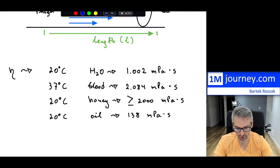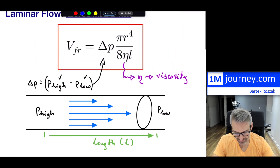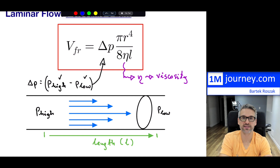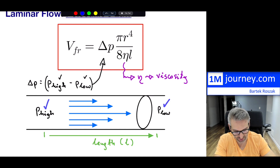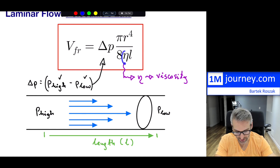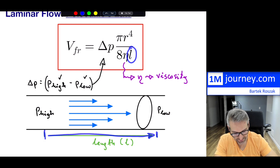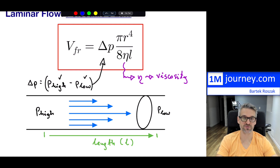So now, when we run into a problem, we can say: we want to know the difference in pressure, the radius of the tube, which fluid we're talking about so we can look up the coefficient of viscosity, and the length of the tube — the length over which we want to observe this volume flow rate.